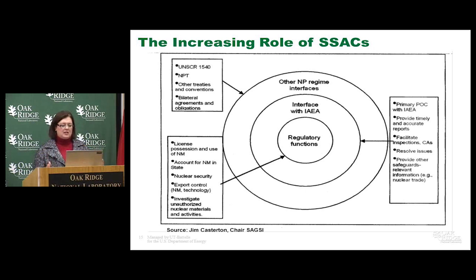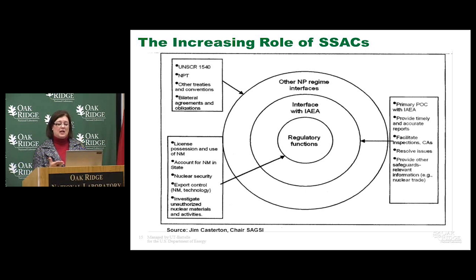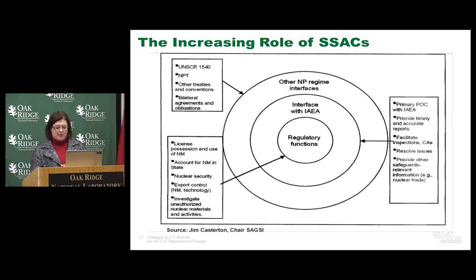It expands as we increase its role to the interface with the IAEA. The SSAC is the primary point of contact with the IAEA. It has to provide reports on a timely and accurate basis. It facilitates inspections and complementary access. It resolves issues. The only communication that the IAEA has with the state to resolve issues is to talk to the SSAC and explain what the problems are. The SSAC's obligation is to resolve these on a timely matter, and also provide other relevant information such as nuclear trade.